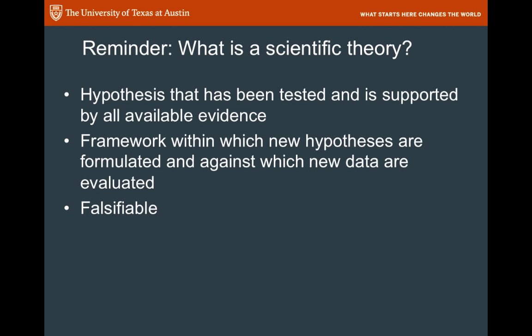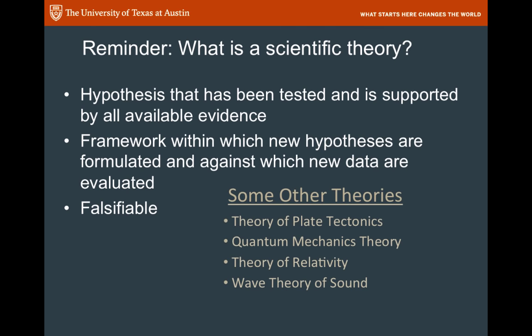What is a scientific theory? A scientific theory is a hypothesis that has been tested and is supported by all available evidence. It's a framework by which new hypotheses can be formulated and tested and new data evaluated, and it is falsifiable — meaning that if there is a test that proves it wrong, the scientific theory will be proven wrong. So far there haven't been any scientific studies that have proven evolution wrong.